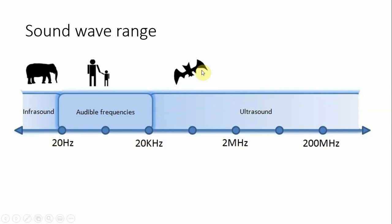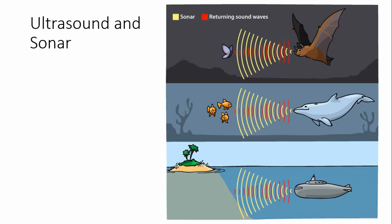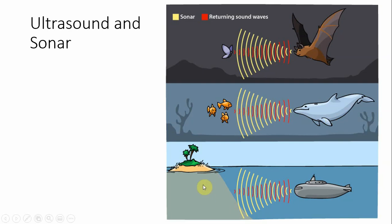Bats use echolocation — they send out high-pitched ultrasonic squeaks that bounce off flying insects, and the returning sound wave is picked up by their ears to locate prey. Dolphins and whales also use echolocation since they have poor eyesight in murky or deep water. Sonar in submarines, depth finders, and fish finders also use ultrasound.